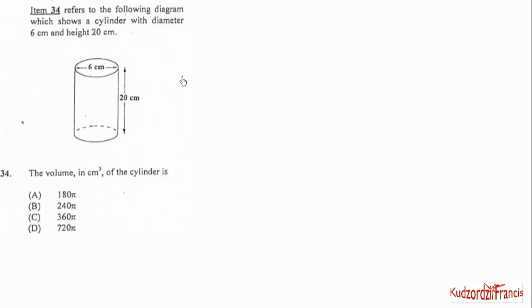We have a cylinder here. So item 34 refers to the following diagram, which shows a cylinder with diameter 6 cm and height 20 cm. The volume in cm³ of this cylinder is, so we know volume of cylinder is πr²h. The r is the radius. So we know this is the diameter. Half of the diameter gives us the radius. The radius will be equal to 6 divided by 2, which is equal to 3.